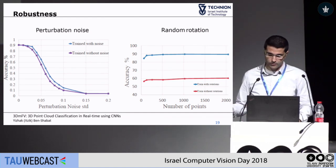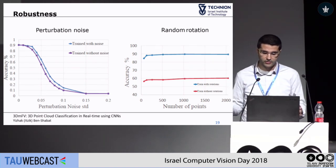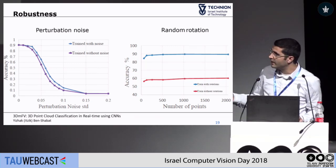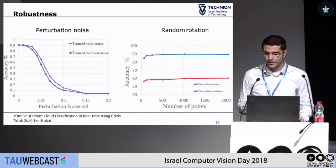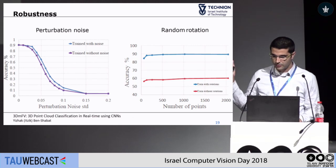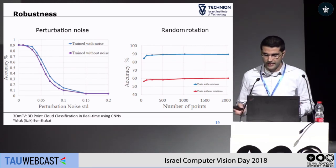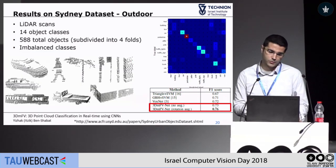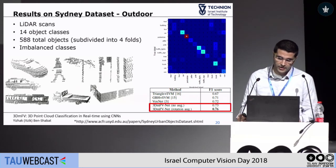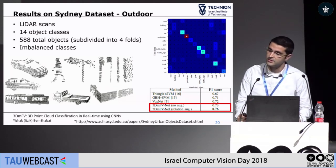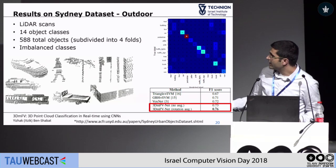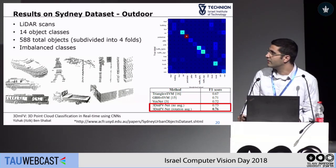For rotations — taking the same point cloud, rotating it, and trying to classify it — our representation itself does not compensate, but when we introduce rotations during training, the network is able to compensate and maintain performance regardless of rotation. These tests were done on ModelNet40 because it's synthetic and easy to manipulate, but we also wanted to explore real data. We used the Sydney dataset with 14 object classes — a very challenging dataset with fewer than 600 total objects and very imbalanced classes — and we achieve better results than competing methods even there.